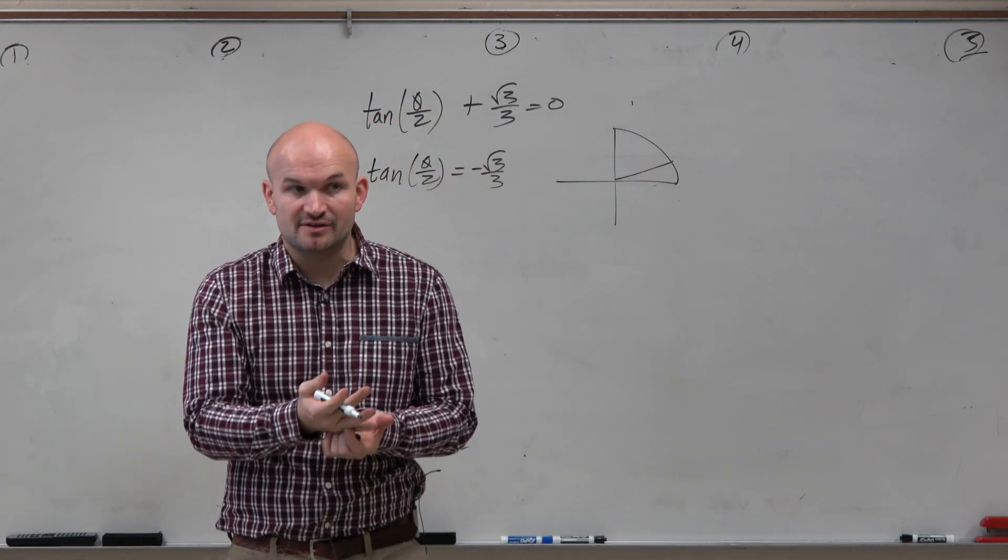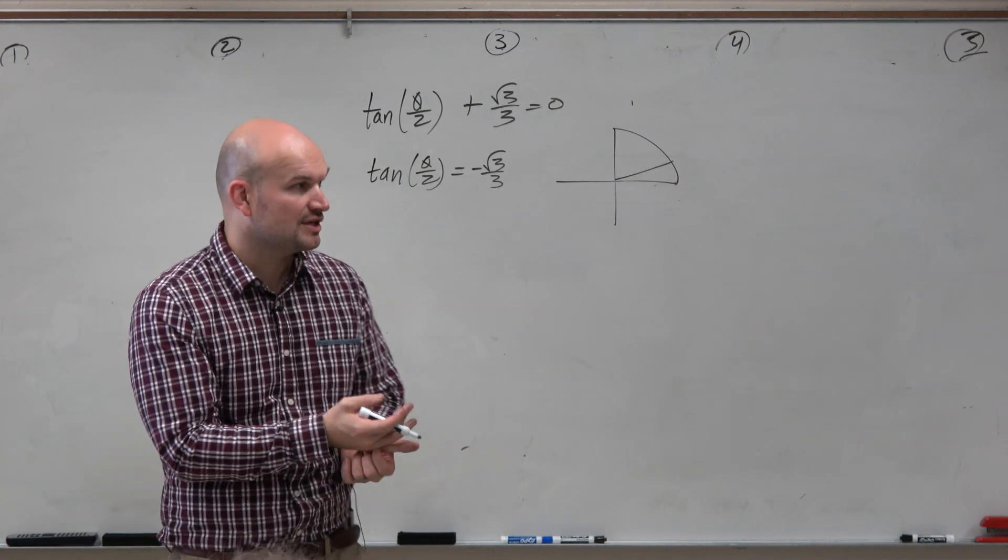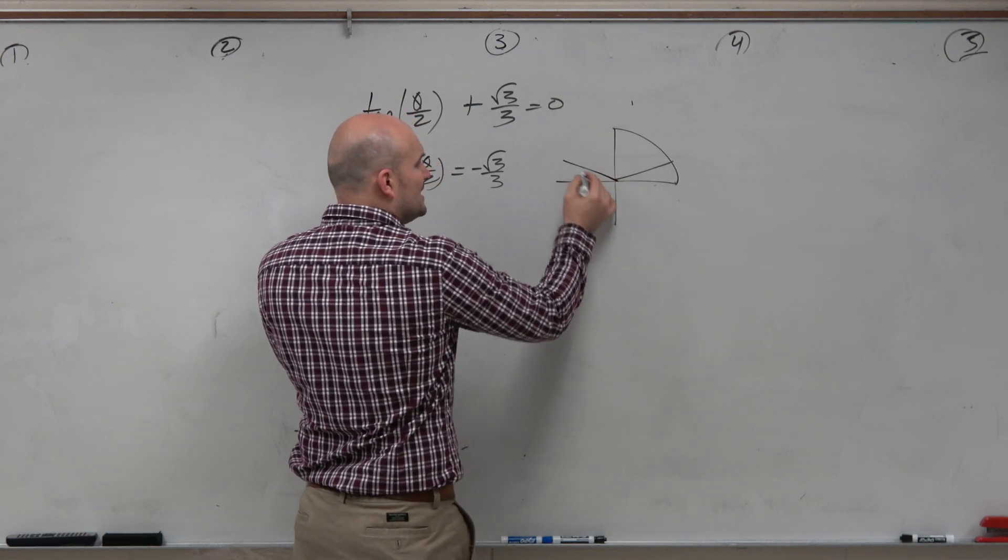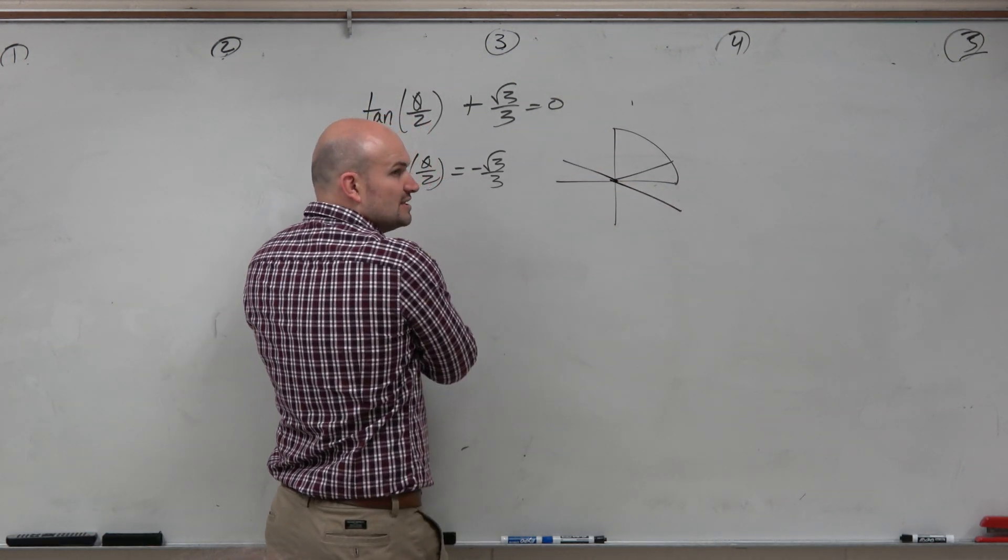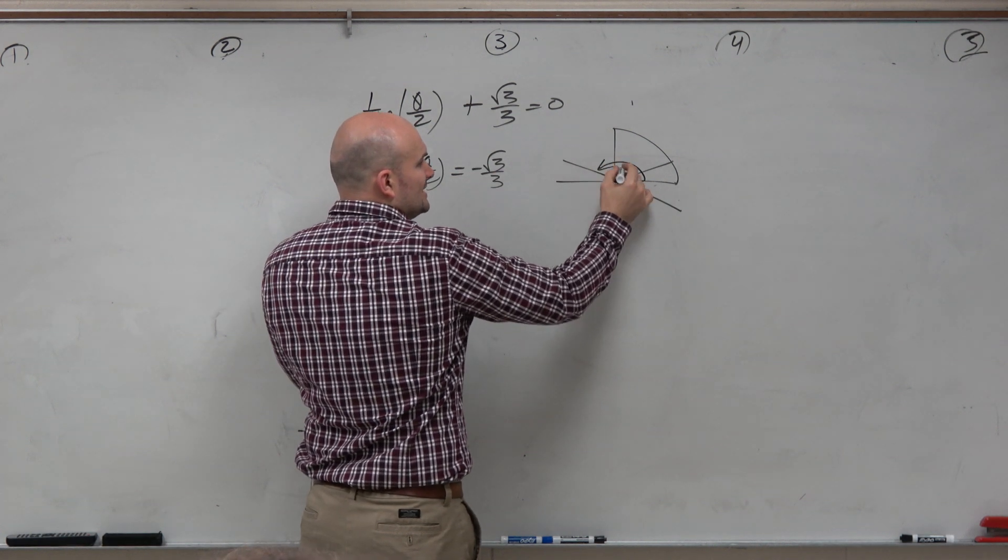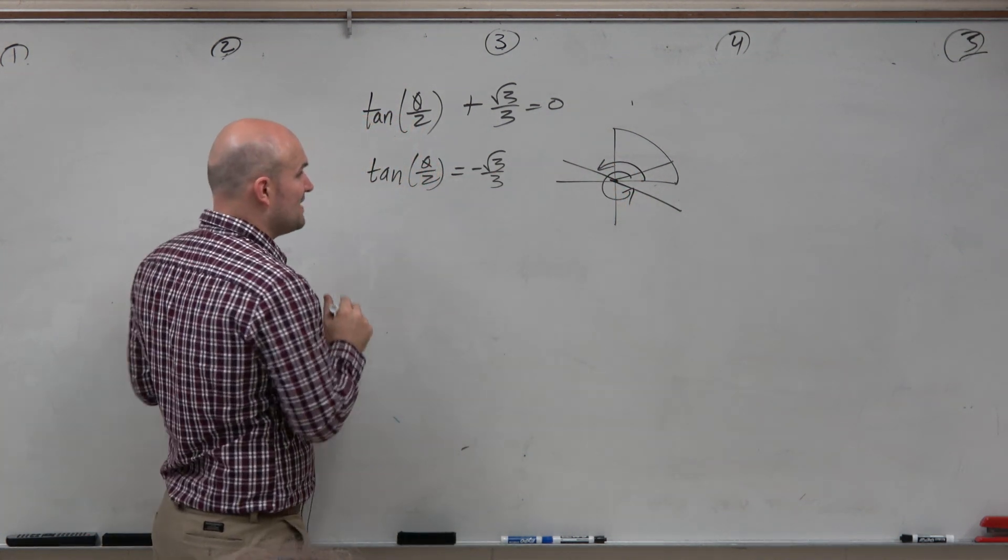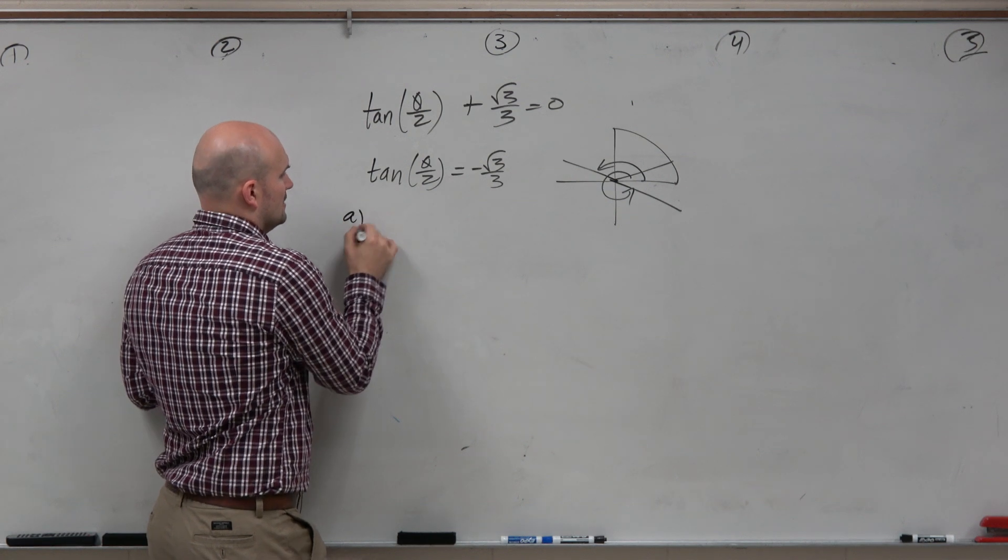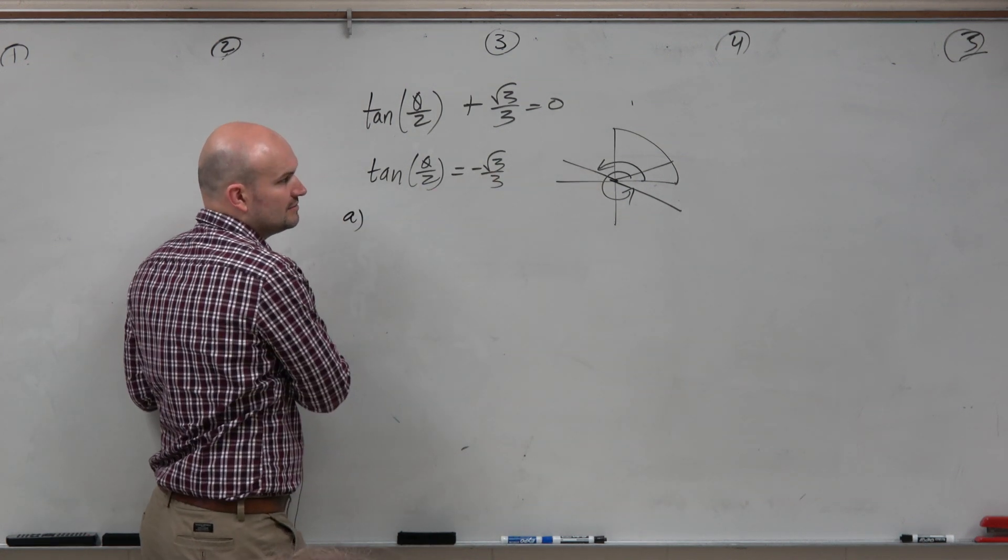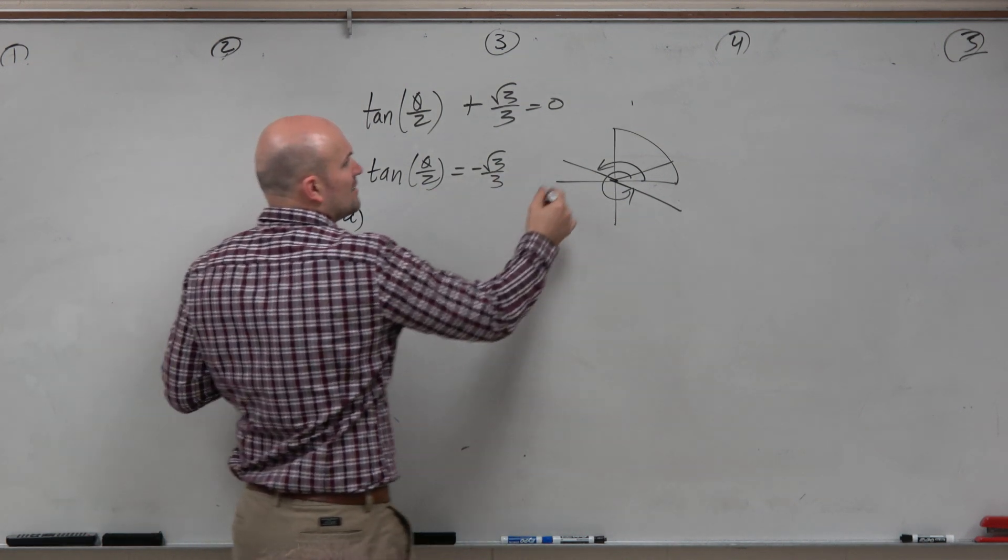But again, we're not looking for positive square root of 3 over 3. We're looking for the negative version. That's going to be in the second as well as in the fourth quadrant. So we need this angle and that angle. Or again, we're trying to find all the solutions. So let's just find this first angle.